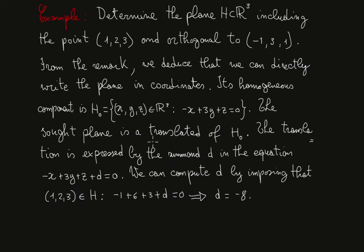The sought plane is a translate of H₀ by definition. The translation is expressed by the sum of d in the equation -x + 3y + z + d equals zero. And we can compute d by imposing that the vector (1, 2, 3) belongs to H.